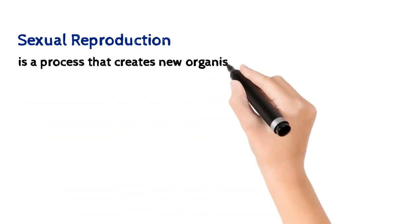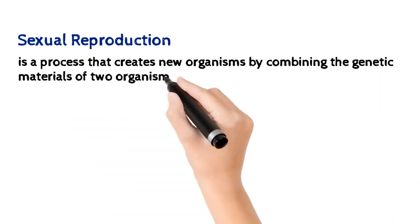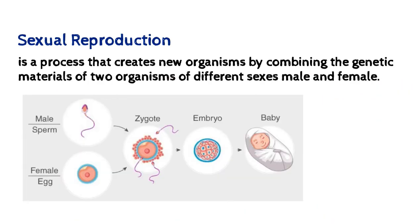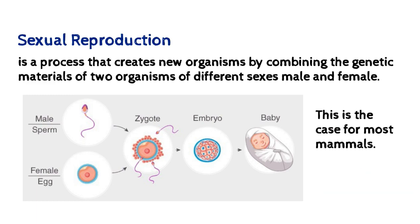A little bit in detail: sexual reproduction is a process that creates new organisms by combining the genetic materials of two organisms of different sexes. What we mean is it will take place when you combine the genetic material of a male organism and the genetic material of a female organism. This is the case for most mammals — as a matter of fact, even us human beings, we fall under this kind of reproduction.